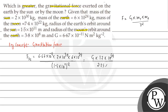Solving the sun-earth calculation: the numerator gives 10^54, divided by 10^22 from squaring the distance. We get 10^54 divided by 10^22, which is 10^32. Then dividing the numerical coefficients: the result is approximately 5.33 × 10^22 Newtons — this is the gravitational force on the earth due to the sun.